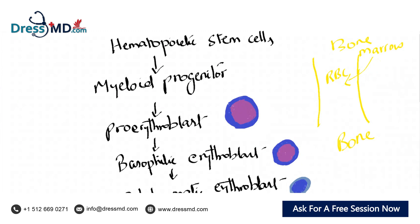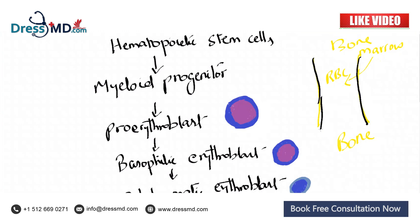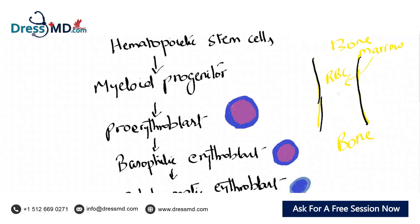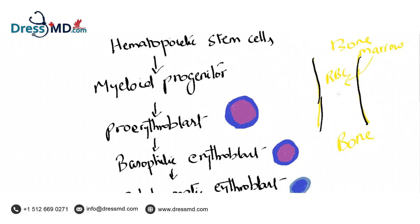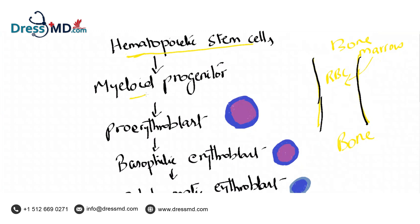As you can see, this area is the bone marrow. This is the bone, and inside the bone we have the bone marrow. Inside the bone marrow there is formation of all the hematopoietic stem cells. I have focused here on how RBCs are formed, but platelets, WBCs, and RBCs are all formed inside the bone marrow. The hematopoietic stem cells form the myeloid progenitor cells, and from the myeloid progenitor cells the first cell formed is the proerythroblast.